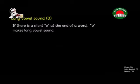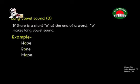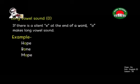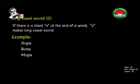First, long vowel sound O: if there is a silent E at the end of a word, O makes a long vowel sound. Whenever O appears in a word, if it sees a silent E at the end, O makes a long vowel sound. Long O sounds like 'O'. For example: hope — here O is with a silent E at the end, so it sounds like 'hope'. Also: bone and mope — similar rules, ending in silent E makes O a long vowel.